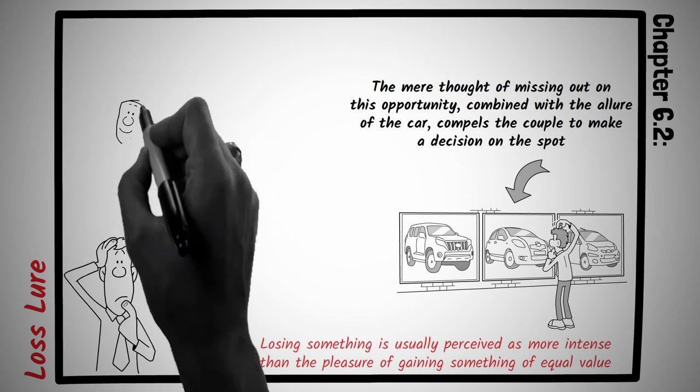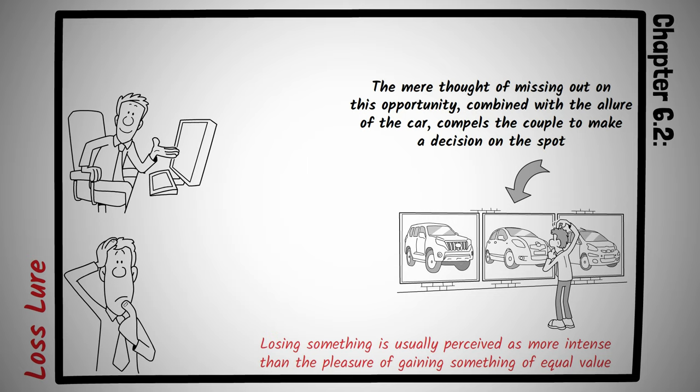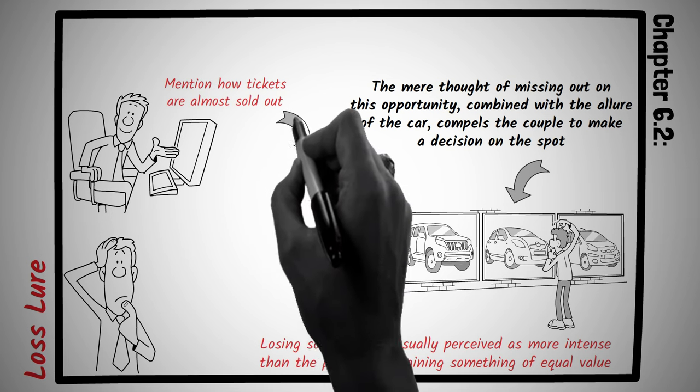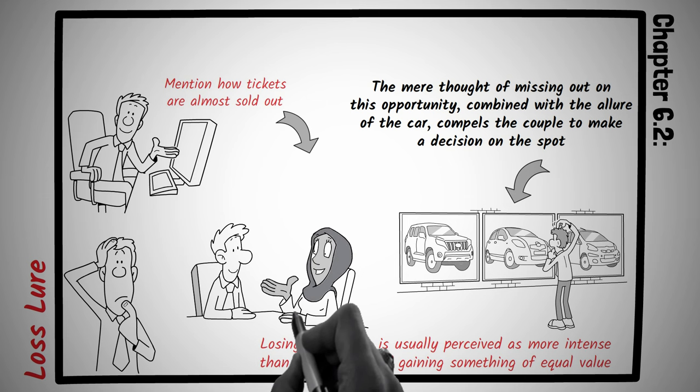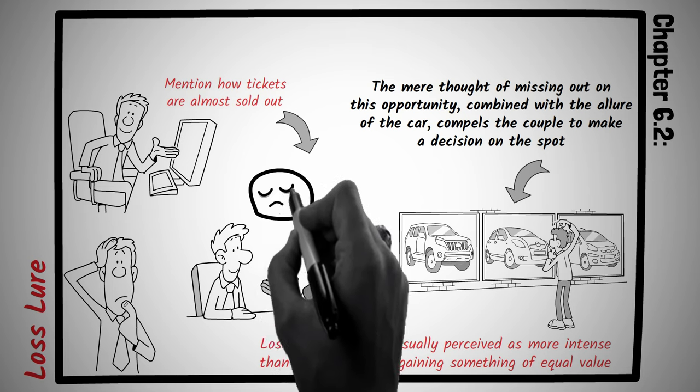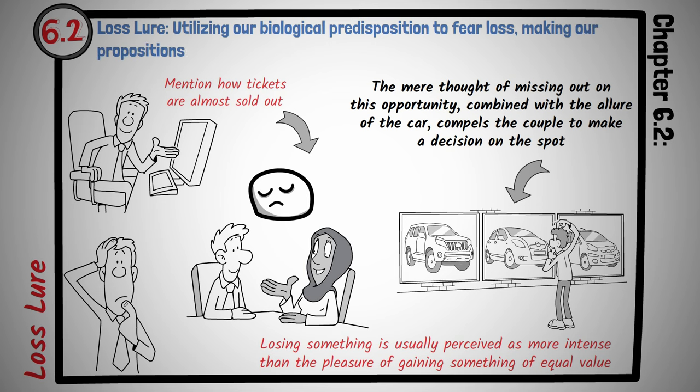Think of those limited time offers you see online. Only three items left at this price, or sale ends in two hours. These are perfect examples of tapping into our fear of missing out. Next time you're trying to convince a friend to join you for a concert, mention how tickets are almost sold out, or it might be the last tour of that artist. This not only creates urgency, but also makes the opportunity seem more valuable. Loss aversion isn't just a concept reserved for high stakes negotiations. It's a daily dance we all partake in, sometimes without even realizing it. By understanding and harnessing this innate human fear, one can make propositions that are hard to refuse, be it in business or personal life. Principle number 6.2 is Loss Lure, utilizing our biological predisposition to fear loss, making our propositions irresistible.